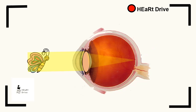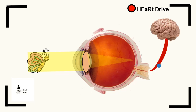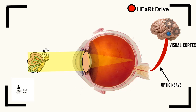The light then reaches the back of the eye and hits the retina. The retina translates the light into electrical impulses, which are then carried to the brain by the optic nerve.